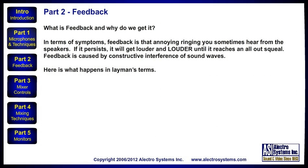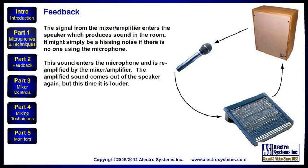Feedback is caused by constructive interference of sound waves. Here's what happens in layman's terms. The signal from the mixer amplifier enters the speaker, which produces sound in the room — it might simply be a hissing noise if there's no one using the microphone. This sound enters the microphone and is re-amplified by the mixer and amplifier. The amplified sound comes out of the speaker again, but this time it's a little louder.